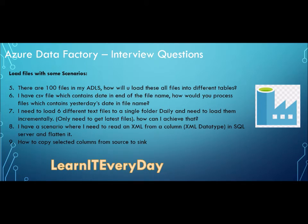There are 100 files in my ADLS - how will you load them into different tables? Again, this is a parameterization question. Do not create 100 pipelines; use one parameterized pipeline. A variation may be that all 100 files should go into a single table instead of different tables. In that case, if all files are in the same folder, you can pick all of them at one shot and dump everything to your destination.